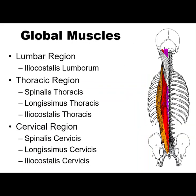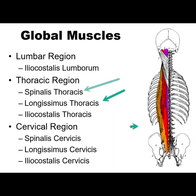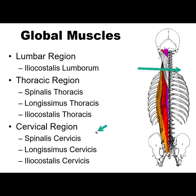We have the cervical region, the thoracic region, and the lumbar region. So based on the layers and the regions, you'd have lumbar iliocostalis, thoracic longissimus, et cetera — that's how they name those muscles. In the lumbar region, we have iliocostalis lumborum. In the thoracic region, you have all three layers: spinalis thoracis, longissimus thoracis, and iliocostalis thoracis. In the cervical region, you again have all three: spinalis cervicis, longissimus cervicis, and iliocostalis cervicis.